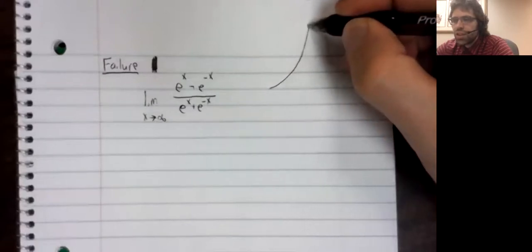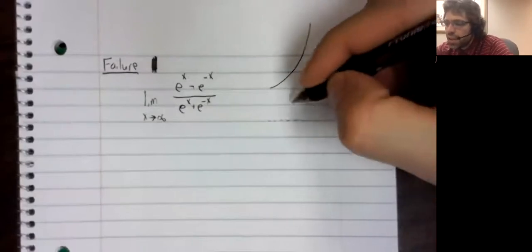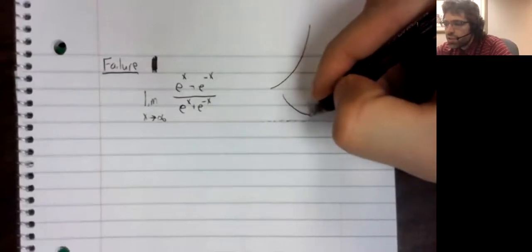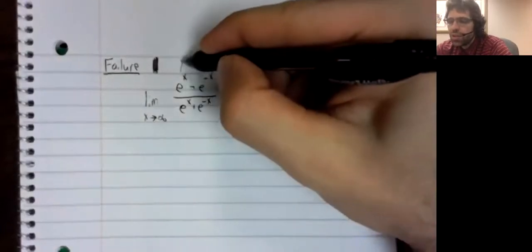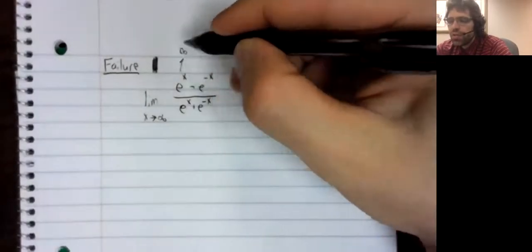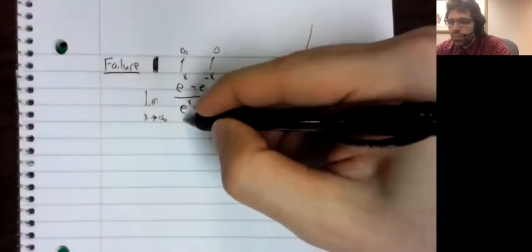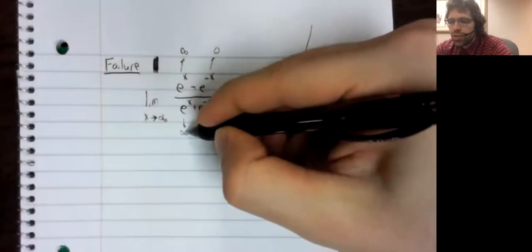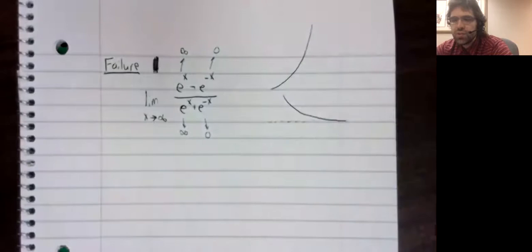e to the x looks like this. e to the negative x looks like that. So this is going to infinity. This is going to zero. This is going to infinity. This is going to zero.